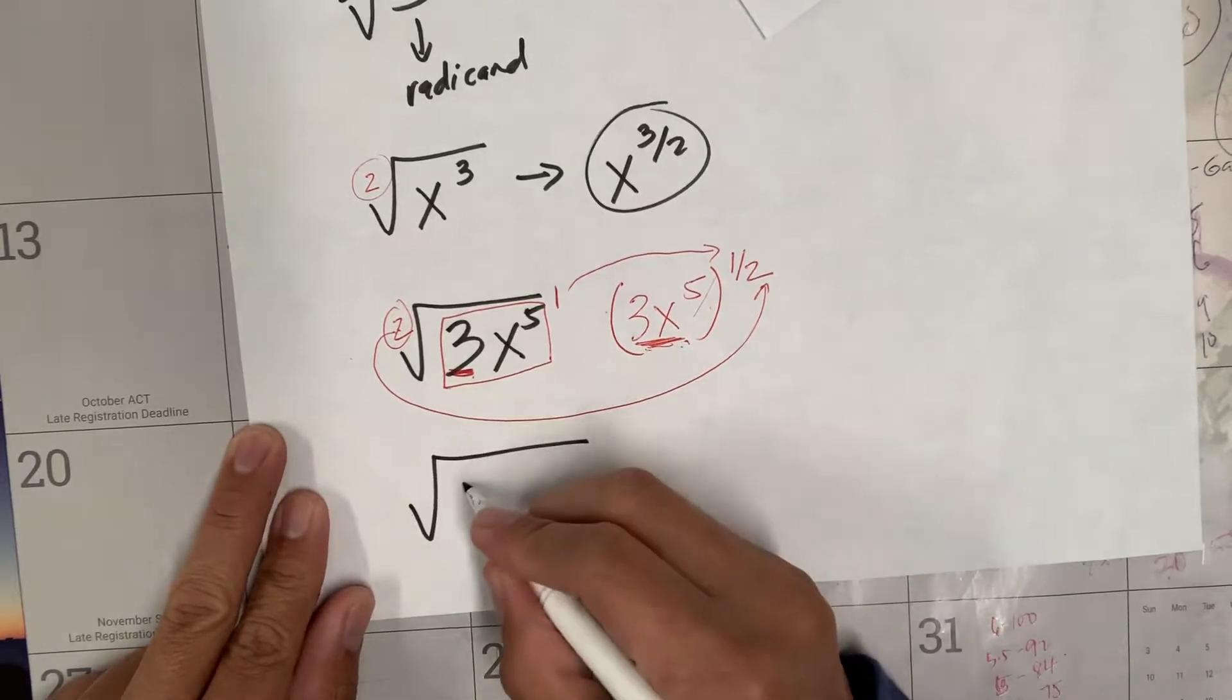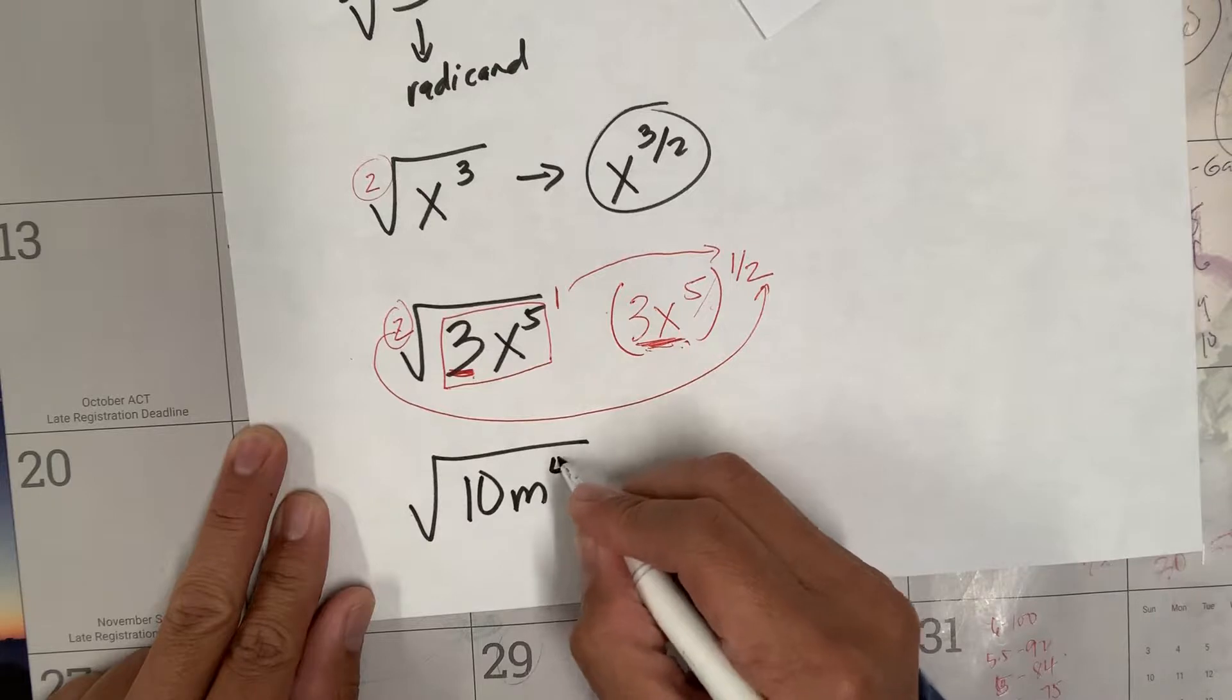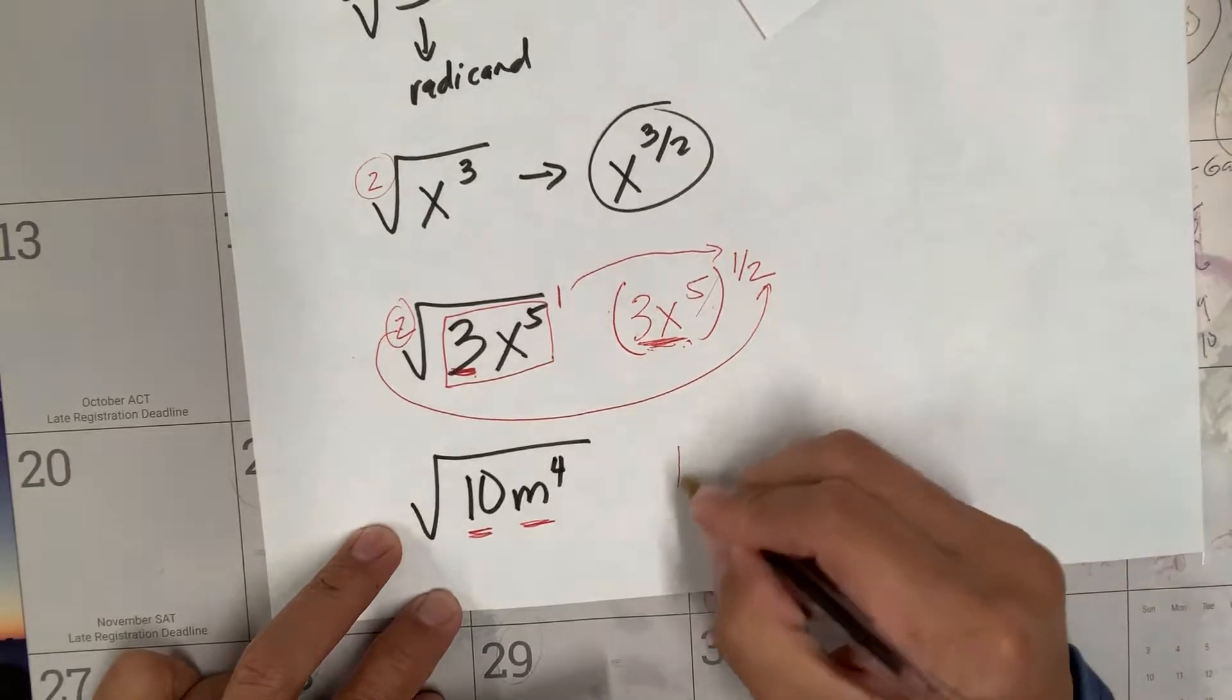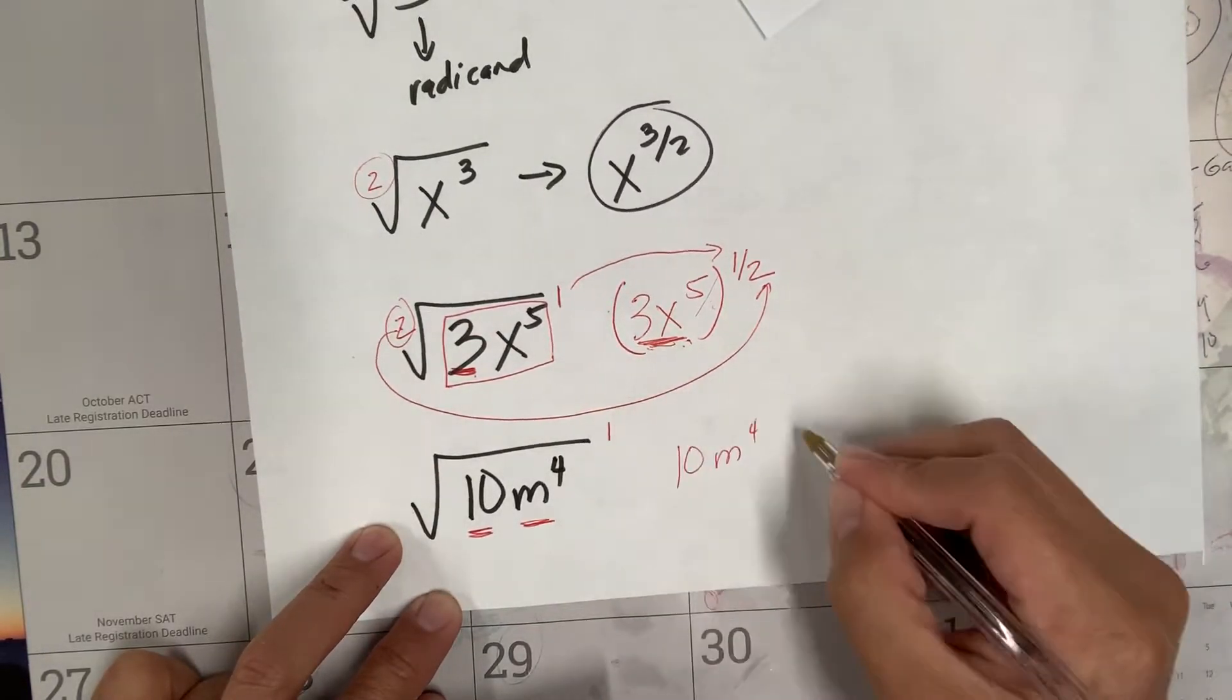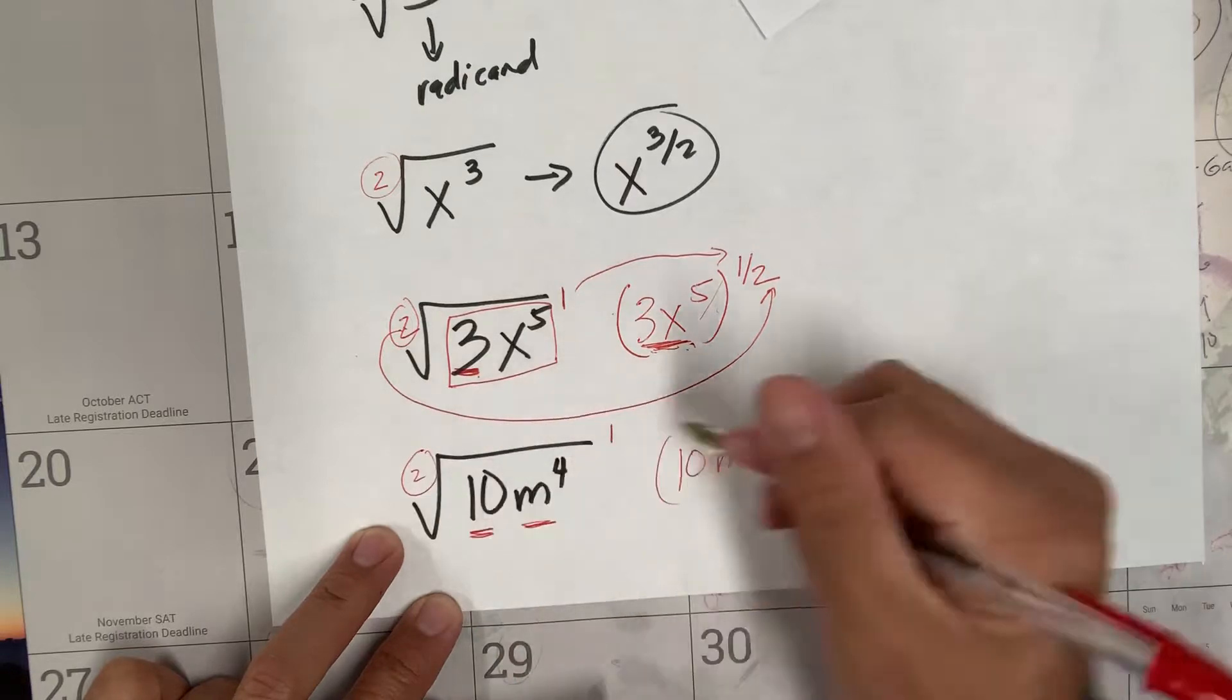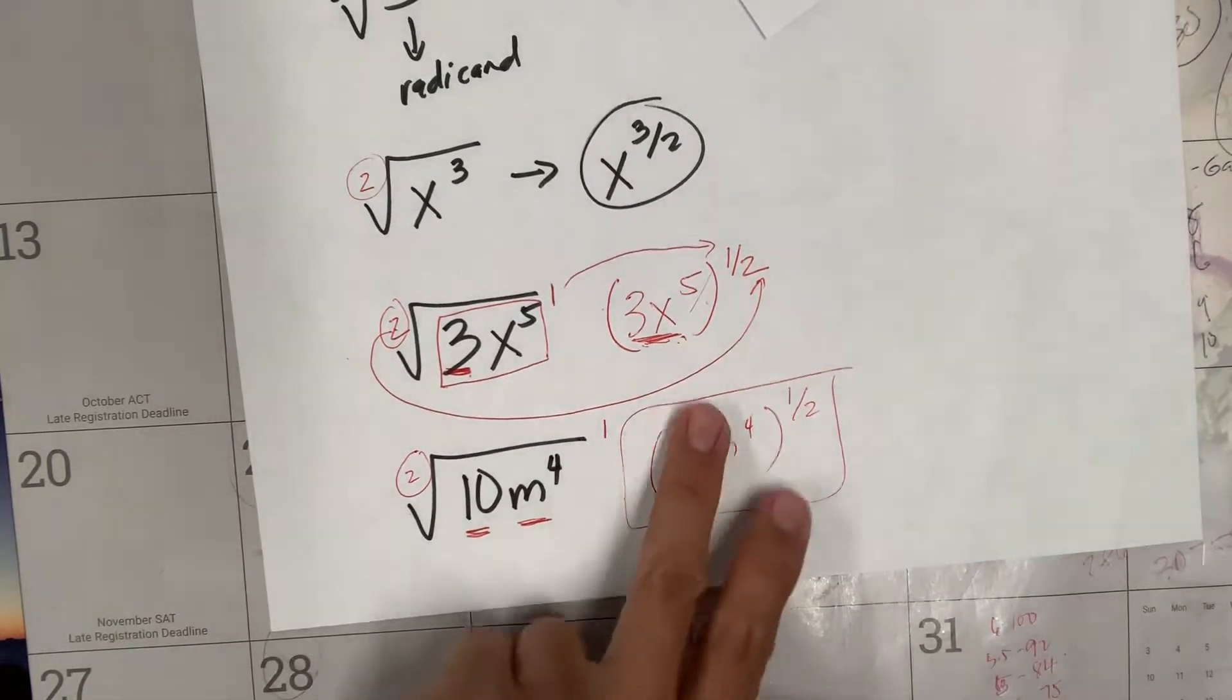One more. Square root of 10m to the fourth power. There's a coefficient and a variable, so I'm going to copy my radicand and there's a power of one there. That's why you put one over here, but the root is two, so over two. Easy, right?